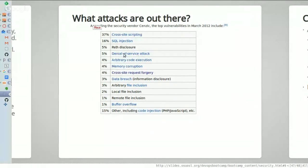Another really common one is a denial of service attack, or DDoS. Someone creates a whole bunch of robots that start requesting pages from a server. A server can only handle so much traffic, and you try to overload it until it falls over or shuts down and the website goes down. As an attacker, you don't really get anything out of it except the knowledge that you took a site down — whereas cross-site scripting is about getting user data, and SQL injection is about hacking into a database to see people's information.